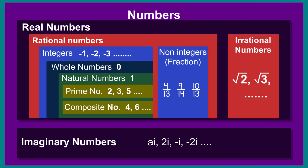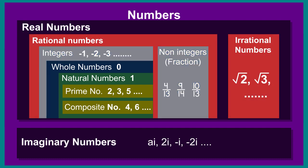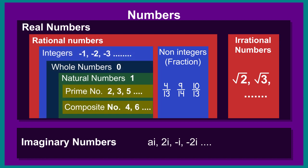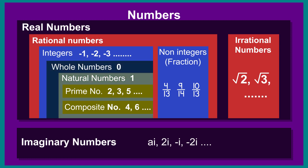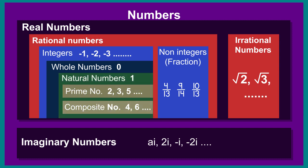Overall review of this chapter: Numbers are classified into real numbers and imaginary numbers. Real numbers are classified into rational and irrational numbers. Rational numbers are further classified into integers and non-integers — non-integers are also known as fractions. Integers include negative integers, 0, and positive integers. The group of 0 and positive integers is whole numbers, and all positive numbers are natural numbers. Natural numbers are of two types: prime numbers and composite numbers. Introduction to real numbers is completed here.